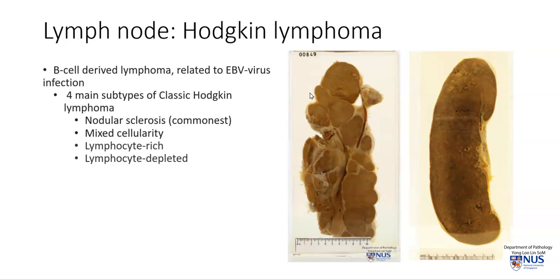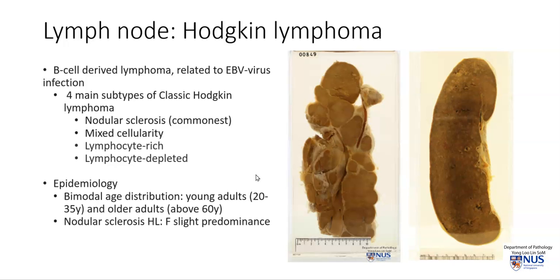Here we have seen an example of enlarged lymph nodes involved by Hodgkin lymphoma, and here is an example of a spleen that is involved with Hodgkin lymphoma. Usually splenic involvement is secondary involvement in addition to nodal involvement. There is a bimodal age distribution - this disease affects young adults, and also another peak in older adults above 60 years old. Nodular sclerosis Hodgkin lymphoma may show a slight female predominance.